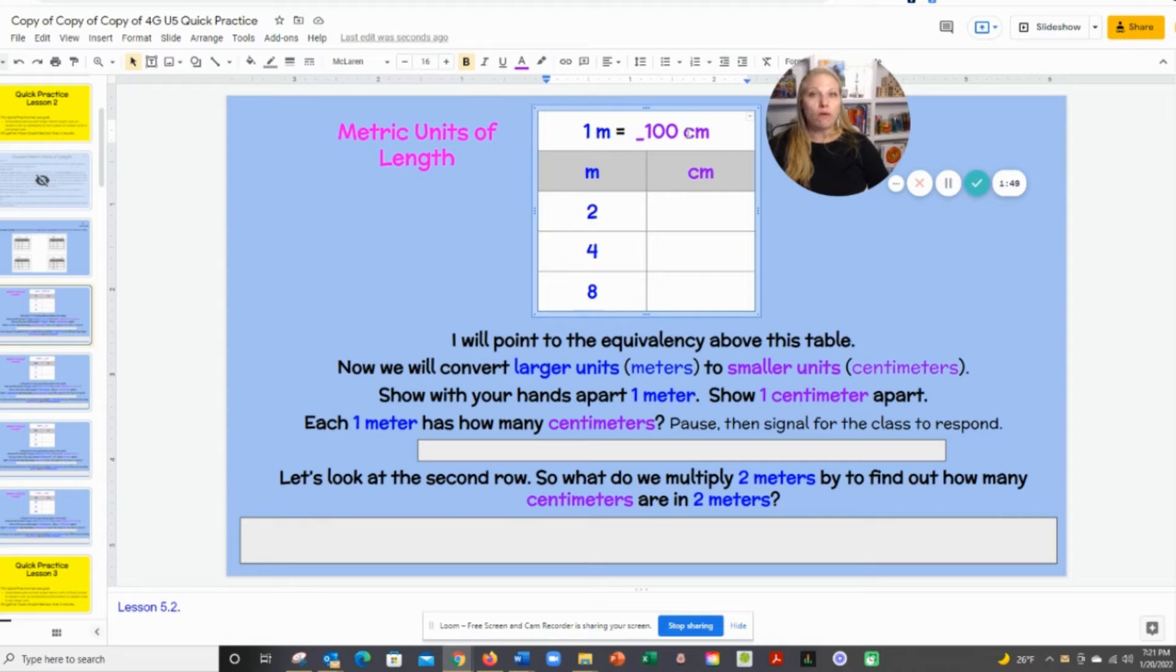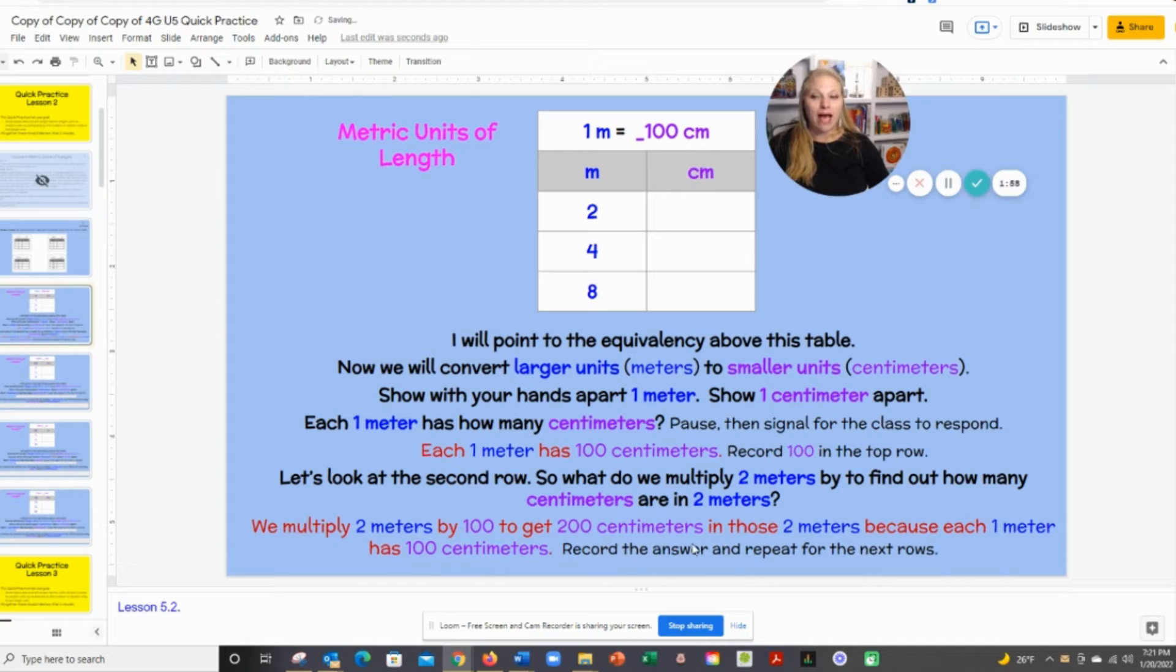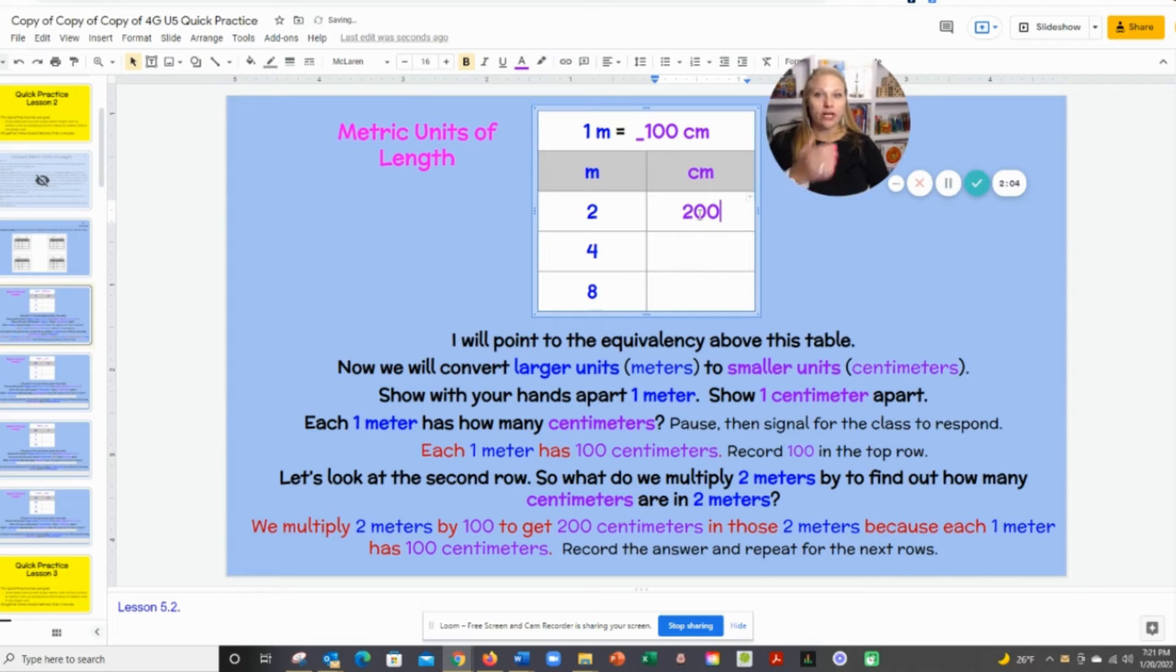Boys and girls, what will I do to the meters to get to my centimeters? Think about it. Class, the whole class should say we would multiply by 100. So boys and girls, 2 times 100, class, 200. 4 times 100, class, 400. 8 times 100, class, 800. Okay, and then that's the end of that quick practice.